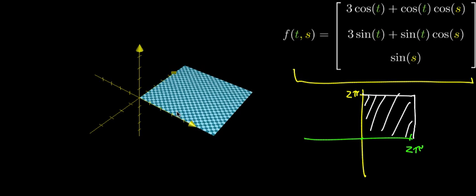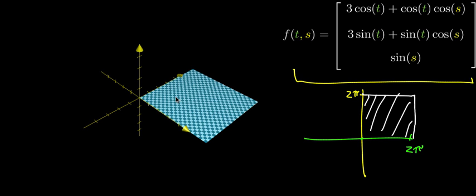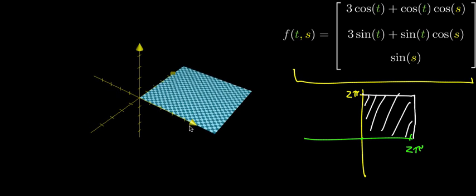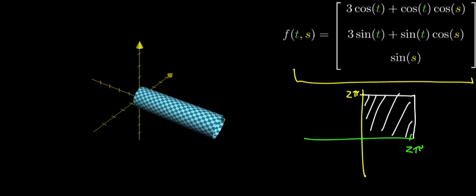So what I'm thinking about here, this square is representing that T-S plane, and for this function, which is taking all of the points in this square as its input and outputs a point in three-dimensional space, you can think about how those points move to their corresponding output points.